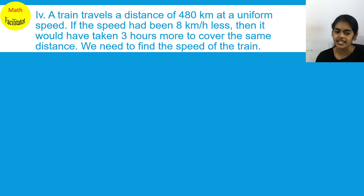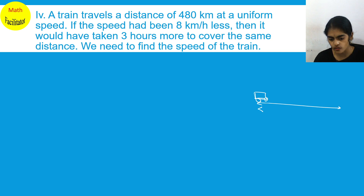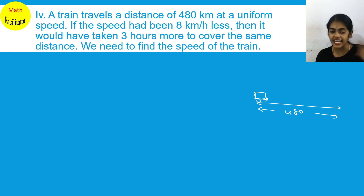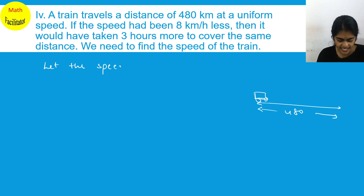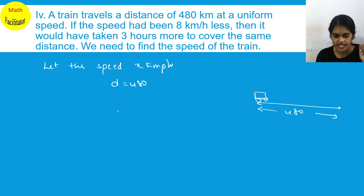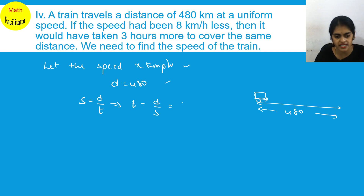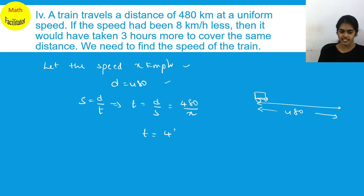A train travels a distance of 480 kilometers at a uniform speed. Let the speed be X kilometers per hour. You know speed equals distance upon time, so time equals distance upon speed. Time in the first case is 480 upon X. In the second case, the speed has been 8 kilometers less, so the new speed is X minus 8.